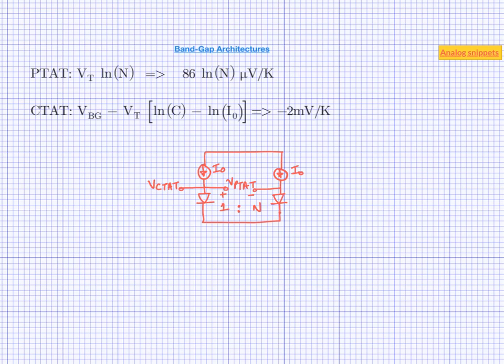If we plug in these values and do the calculation, we get a value which is more than 12 billion. Obviously it is impractical to have a device ratio of 1 to 12 billion, so we can discard this option as very impractical. Our next option is to somehow amplify the PTAT voltage.